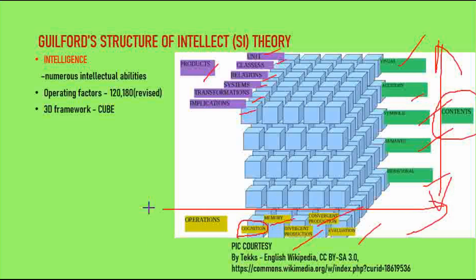Coming to the Operations dimension: First is Cognition — the ability to understand and comprehend things. Memory is how you store information — memory recording and retention. Divergent production is the ability to generate multiple solutions to a problem. Convergent production is the ability to produce a single solution following the rules. Evaluation is the ability to judge.